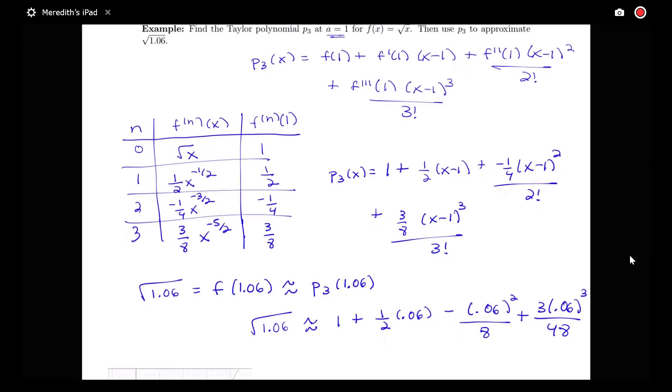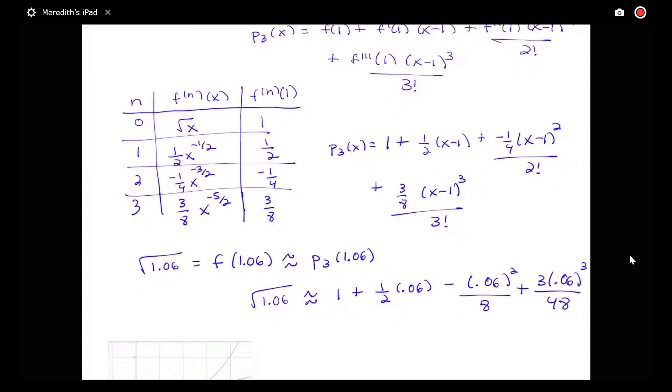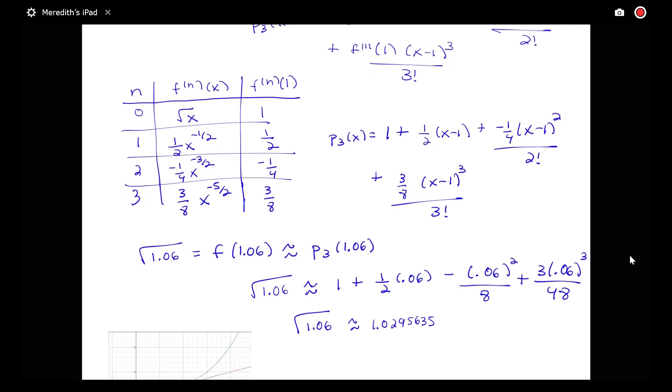We can find what this value is here. This particular approximation would say that the square root of 1.06 is about 1.0295635. What we've done with this approximation is we've simplified the kind of operations that we need to find an approximate value to the square root of 1.06. I can just use a four-function calculator to get that approximation. This gives us an idea of how we can use Taylor polynomials to approximate functions.